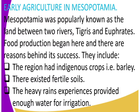What are some of the reasons that made domestication or production of crops successful in Mesopotamia? First, the region had indigenous crops, for example barley. There also existed fertile soils. Mesopotamia was the land between River Tigris and River Euphrates, and during seasons when these rivers flooded, fertile soil called silt was pushed into the farms. Silt is very fertile.